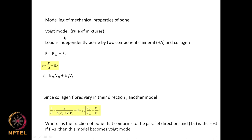This is called the Voigt model. Since the applied force gets distributed on the mineral side as well as on the collagen side, and using σ = F/A = E × ε, the modulus of the bone is given by: E_bone = E_mineral × V_mineral + E_collagen × V_collagen. This is called the mixture rule.